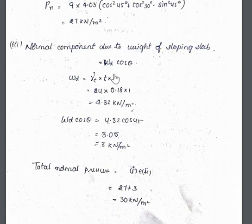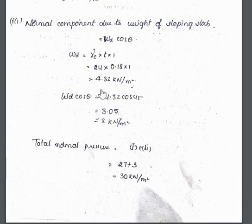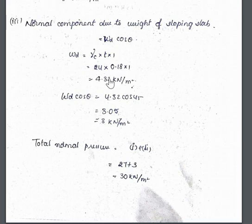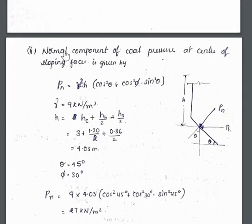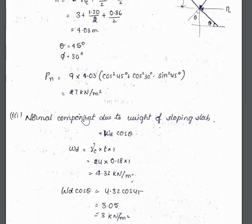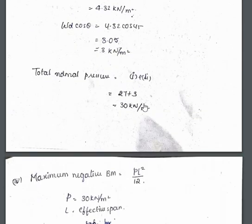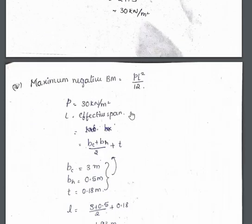Next, find the normal component due to the weight of the sloping slab, given by w_d × cos(theta). The formula for w_d uses a thickness of 0.18 m and concrete density of 24 kN/m³. Substituting all values, we get w_d × cos(theta). The total normal pressure is the addition of the normal component due to self-weight and the normal component due to the weight of the material, giving 30 kN/m².